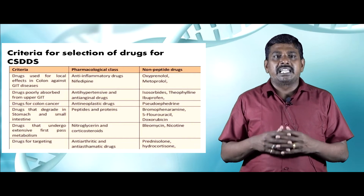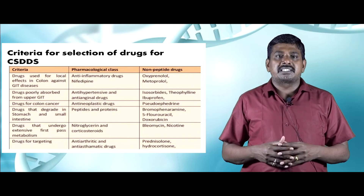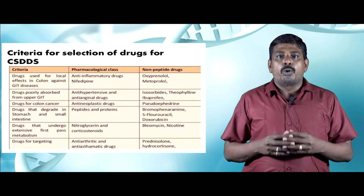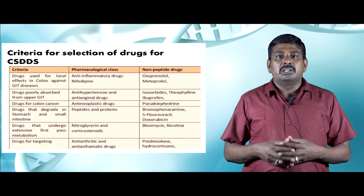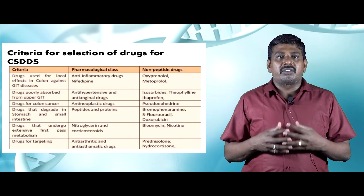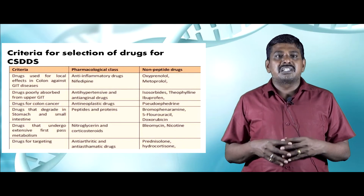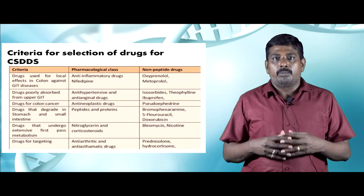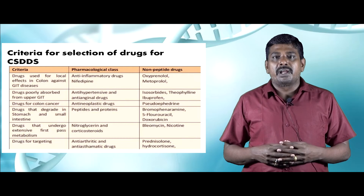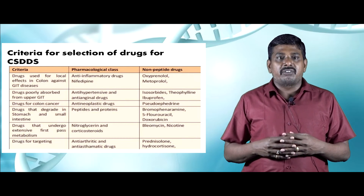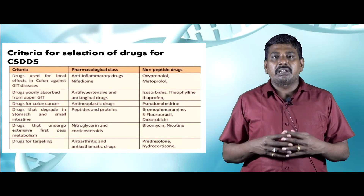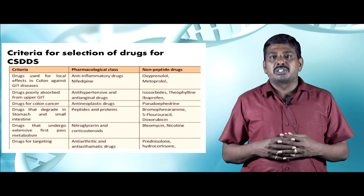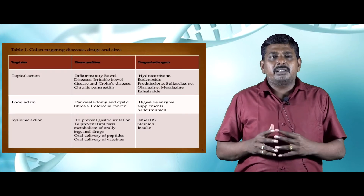For colon cancer, the relevant class is antineoplastic drugs, with non-peptide examples including pseudoephedrine. For drugs degraded in the stomach and small intestine, peptide and protein drugs are key, with non-peptide examples including chlorpheniramine, 5-fluorouracil, and doxorubicin. For drugs undergoing extensive first-pass metabolism, pharmacological classes include nitroglycerin and corticosterone, with non-peptide examples bleomycin and nicotine. For anti-arthritic and anti-osmotic targeting, prednisolone and hydrocortisone are the relevant non-peptide drugs.